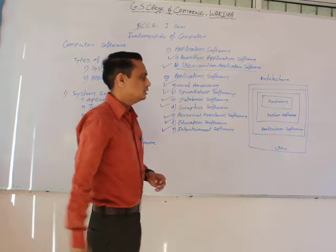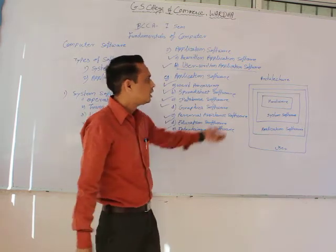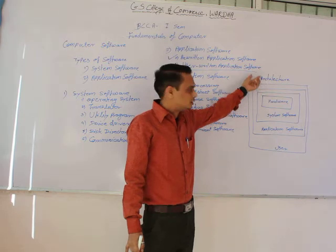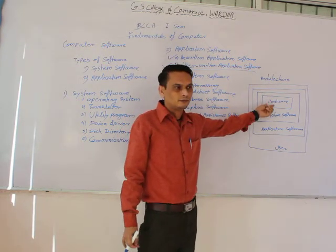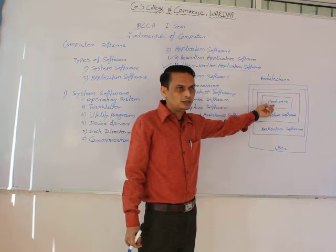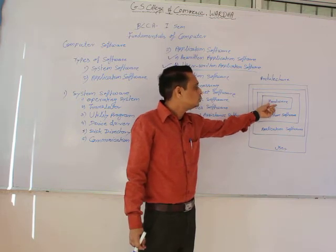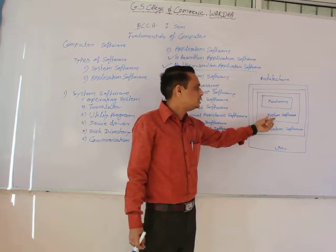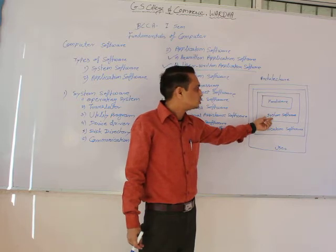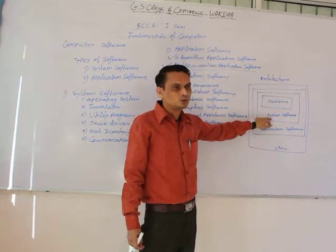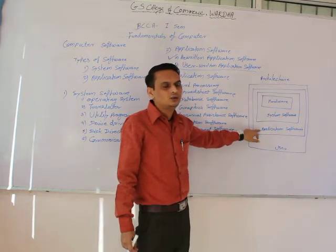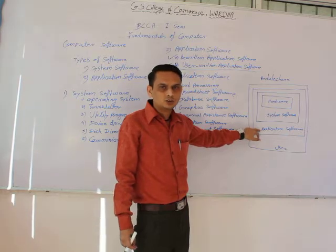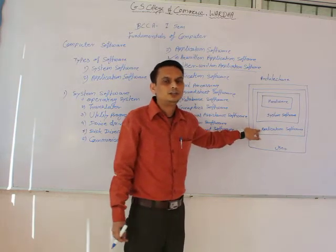All these things are included in the software architecture. At the center of the architecture we have the hardware — our computer system. To manage the hardware, we need system software, which manages all types of peripherals. To execute a specific task, we need application software.